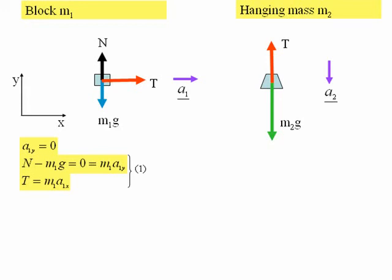Let's now consider the hanging mass. We don't need to consider motion in the horizontal direction because there's no acceleration in that direction, so we're just going to write down this time the equation of motion in the vertical direction. And that is M2G minus T is equal to M2A2Y.